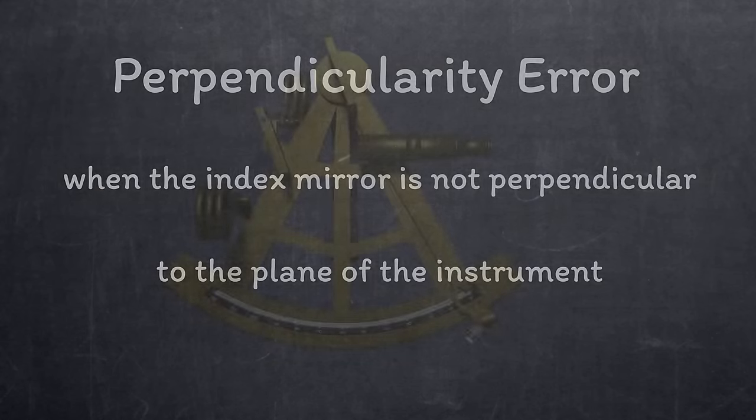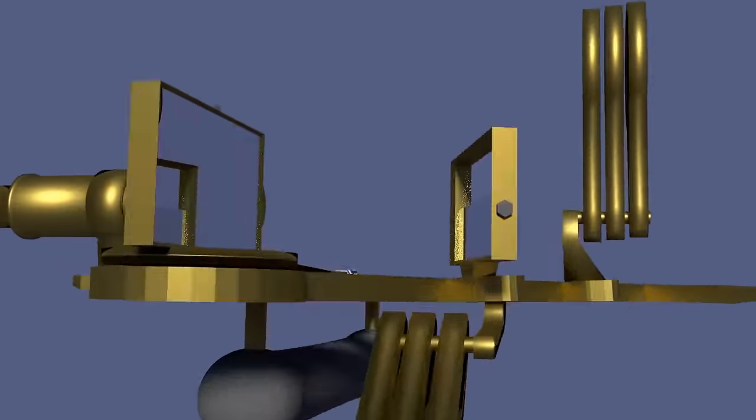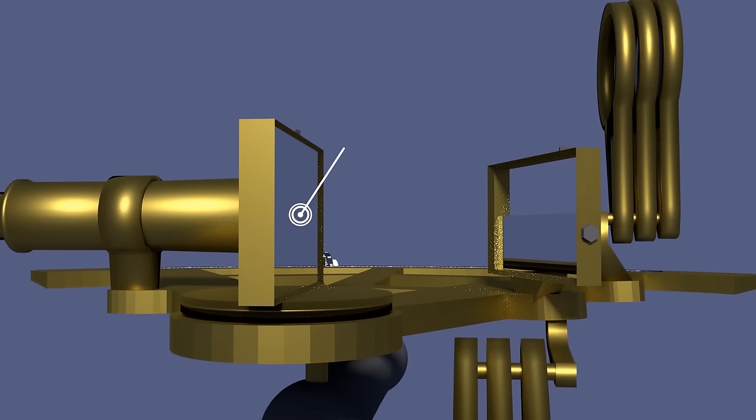To check for perpendicularity error you set the index arm part way, say 30-40 degrees, and then you look straight across the plane of the instrument so that you can see the arc both directly and reflected in the index mirror. You're looking for the real and reflected arcs to appear continuous and flat. As you can see this mirror is set perfectly and that's just because it's a computer generated model. As I introduce some perpendicularity error you can see the change in the view. The arc no longer appears continuous.